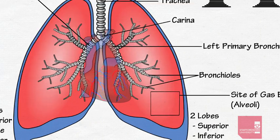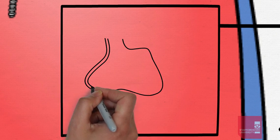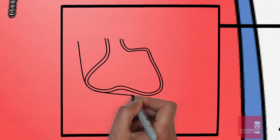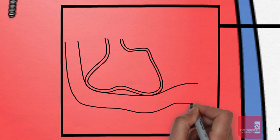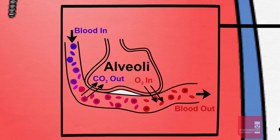Surrounding the alveoli there's a very rich blood supply, and as both the lining of the alveoli and the adjacent capillaries are both only one cell thick, it allows for exchange of gases between the air and the blood supply.